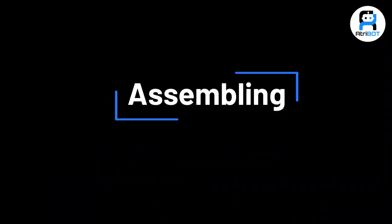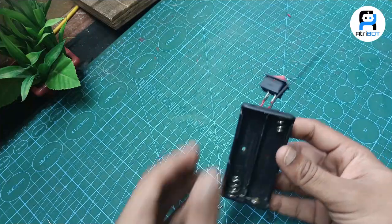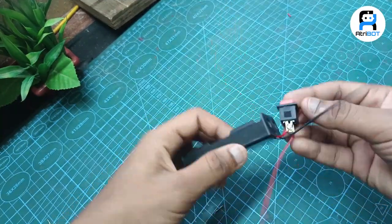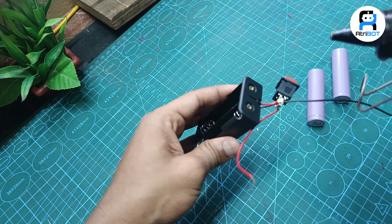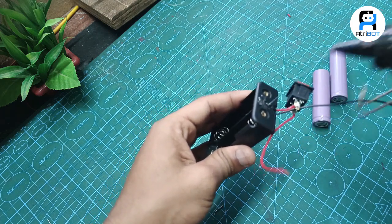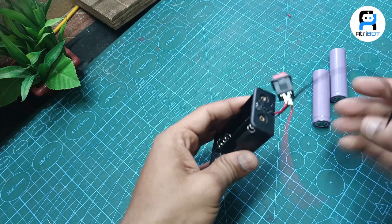Assembling: Using glue, attach the SPST switch to the 2x18650 battery holder perfectly.